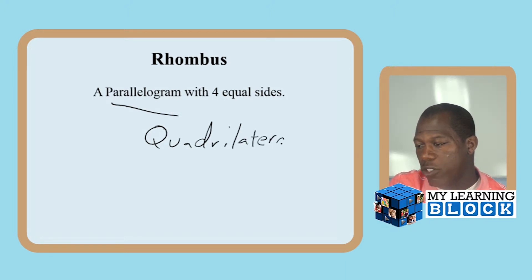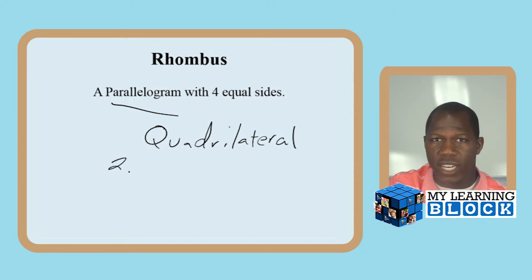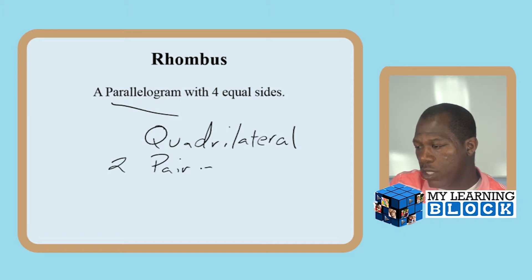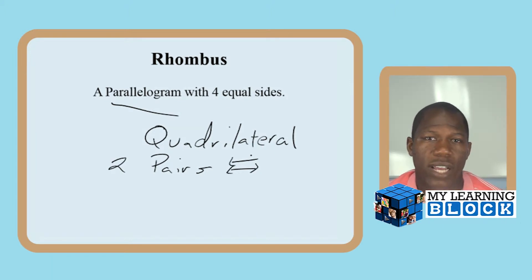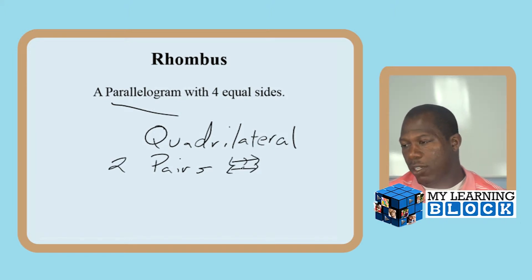What we also know is it has two pairs of parallel sides. So when it comes time to talking about the rules, we know that it is a quadrilateral and it has two pairs of parallel sides, making it a parallelogram.